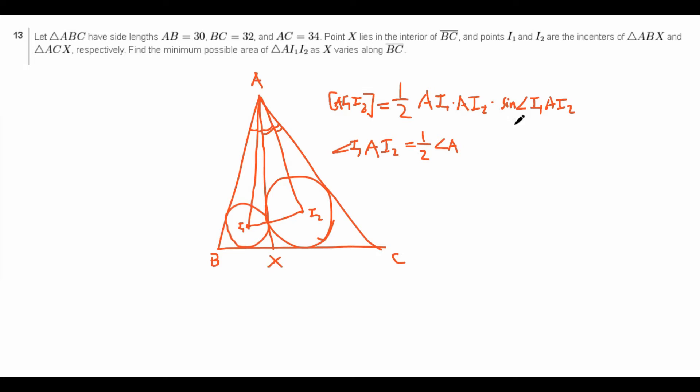Well, since I1 is the in-center, then that means this angle is bisected. And since I2 is the in-center, then that means that this angle is bisected. So we notice that the angle I1, A, I2 is actually just half the angle BAC. So angle I1, A, I2 is just one half of angle A. So now, we basically know sine of I1, A, I2.